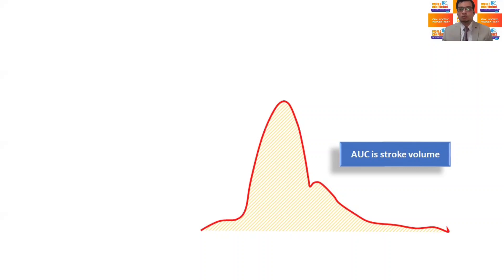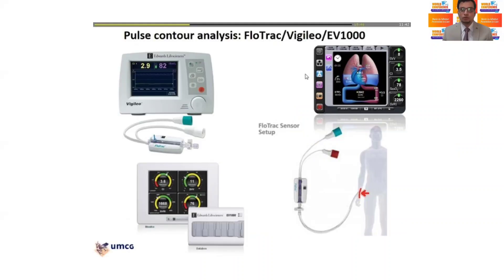Now the area under this normal arterial curve is usually the stroke volume, which is recorded using the pulse contour analysis by various cardiac output monitors. So that's very important.